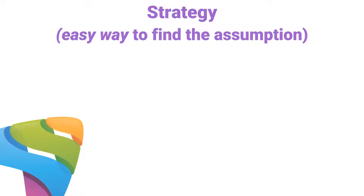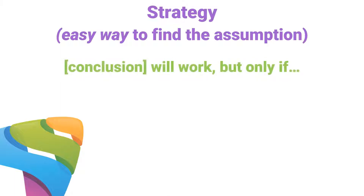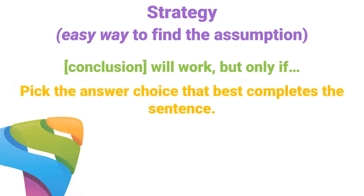I'm gonna show you the easy way to find any assumption in any of these questions. First, pick out the conclusion, and then say to yourself, 'That conclusion will work, but only if.' Then pick out the answer choice that best finishes that sentence. That's gonna be your assumption — it's that easy.